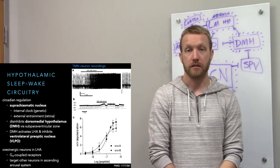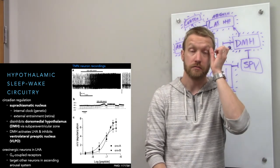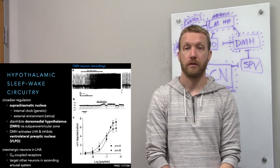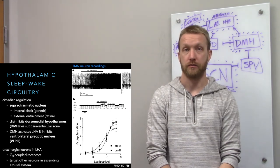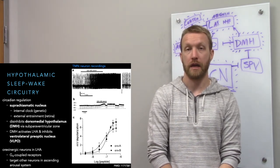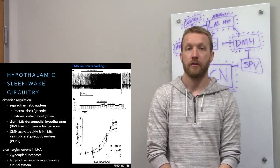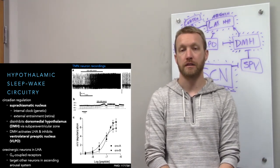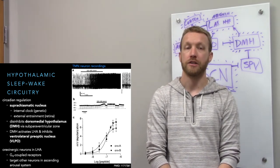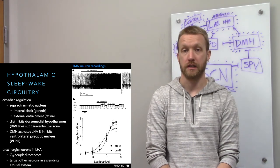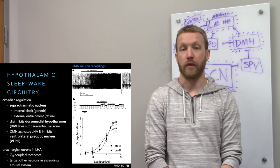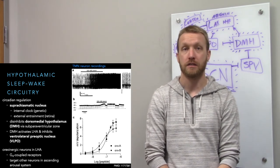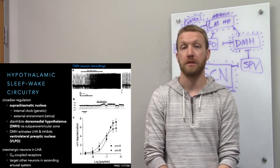Orexin stimulates neurons in the tuberomammillary nucleus that release histamine throughout the cortex. In panel A we can see the raw recording, and panel C shows that orexin application causes depolarization via GQ-coupled receptors, producing long-lived excitation. Even after orexin is no longer applied, the neuron maintains a high level of firing because we're dealing with metabotropic receptors.